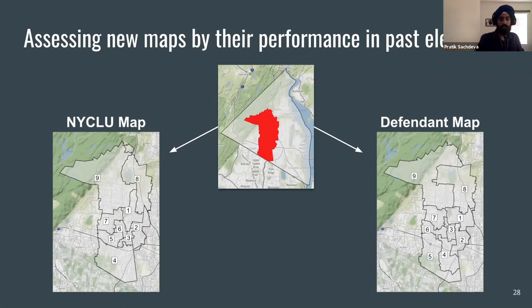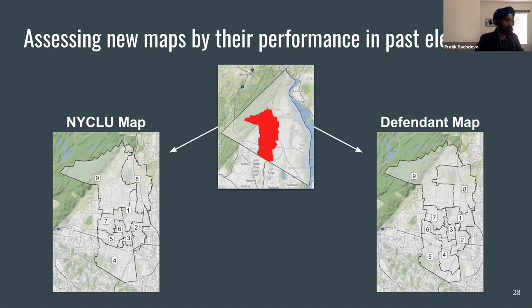Our approach is to simulate past elections using these maps — assessing their performance by running them against past elections. We know who voted from the voter file and where they are because we already geocoded them. So we can actually run the election, examine where minority voters turn out to vote in which wards, and determine how many seats they would have won if these maps had been in place at that time.